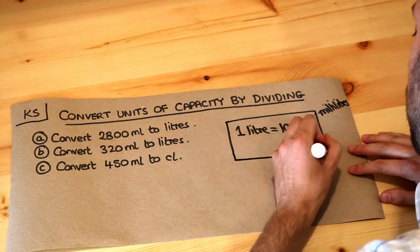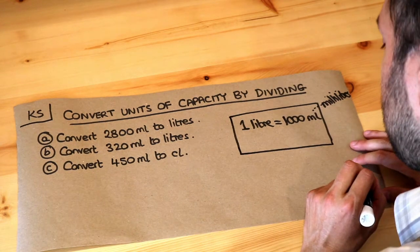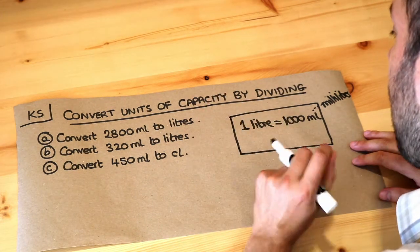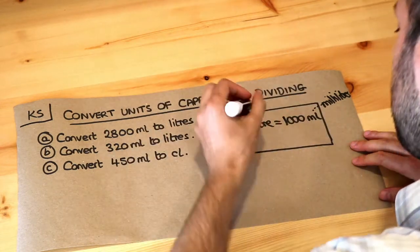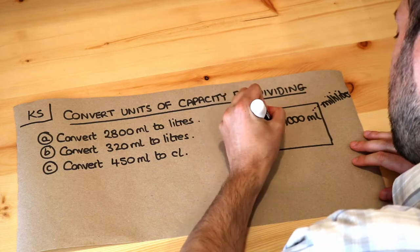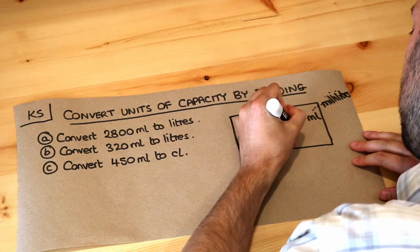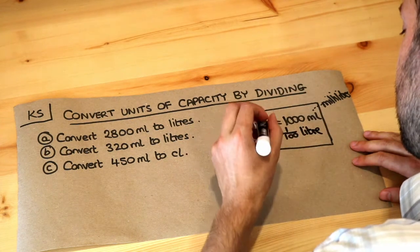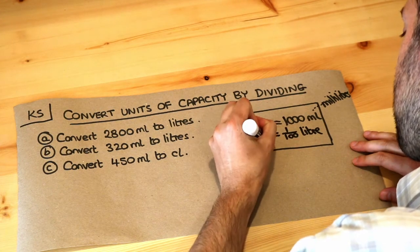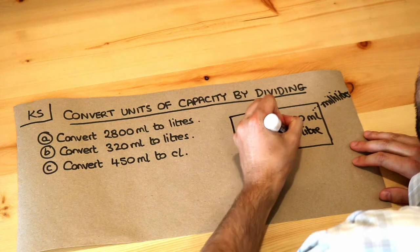Now a unit you might not have seen is centilitres, and centi just means a hundredth of, like a centimetre for example is a hundredth of a metre. So one centilitre is a hundredth of a litre. Or another way of writing that is that one litre is a hundred centilitres.